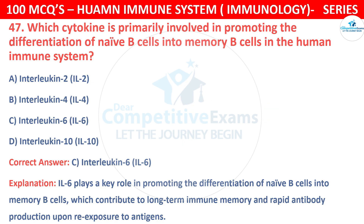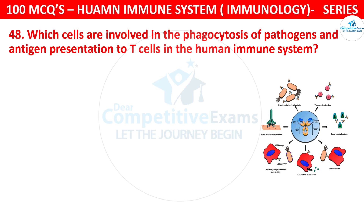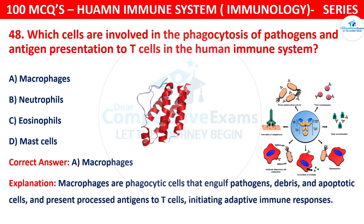Question number 48. Which cells are involved in the phagocytosis of pathogens and antigen presentation to T cells in the human immune system? The options are macrophages, neutrophils, eosinophils, or mast cells. The correct answer is A, that is macrophages. Macrophages are phagocytic cells that engulf pathogens, debris, and apoptotic cells, and present processed antigens to T cells, initiating adaptive immune responses.